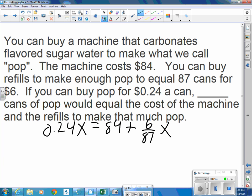And so we can go ahead and put that into decimal form. So this turns out to be 0.071, a little bit more than 7 cents a can. So my $84 plus 7 cents a can will eventually equal 24 cents a can.